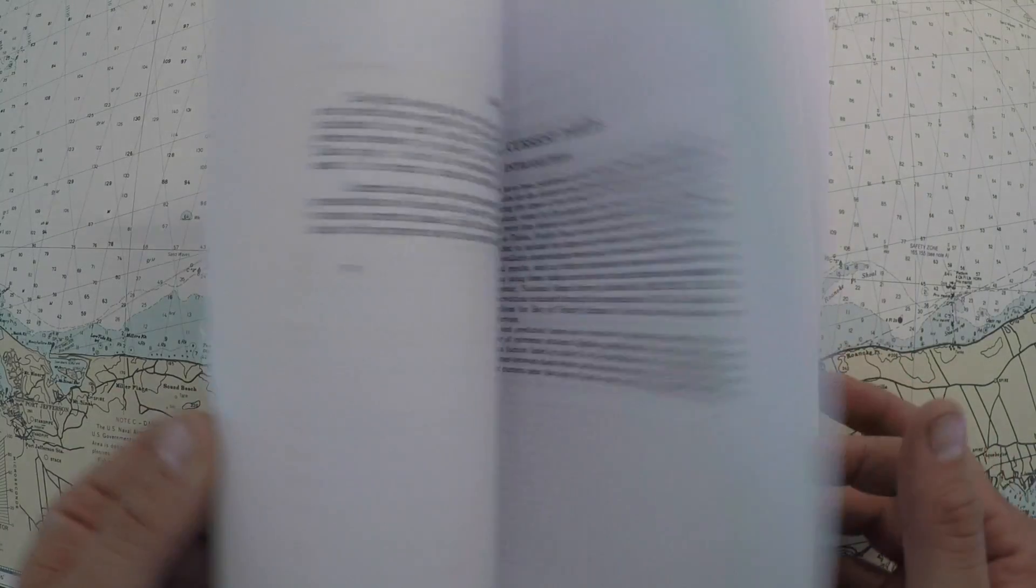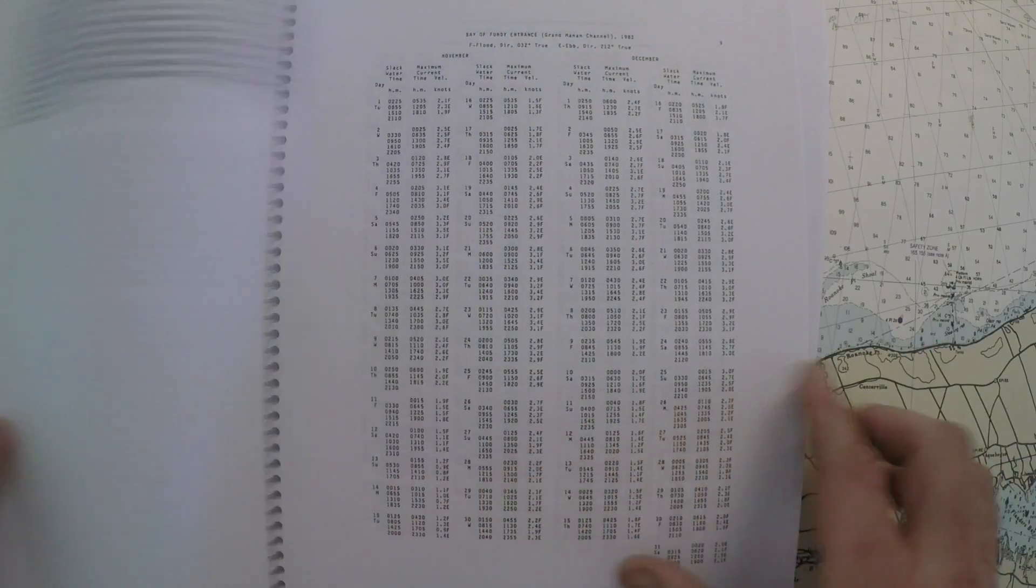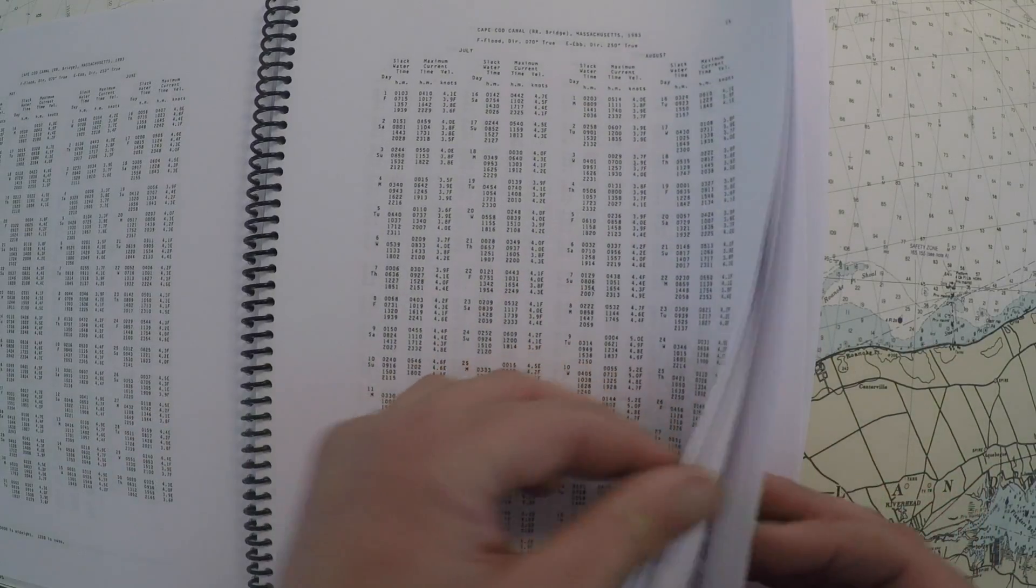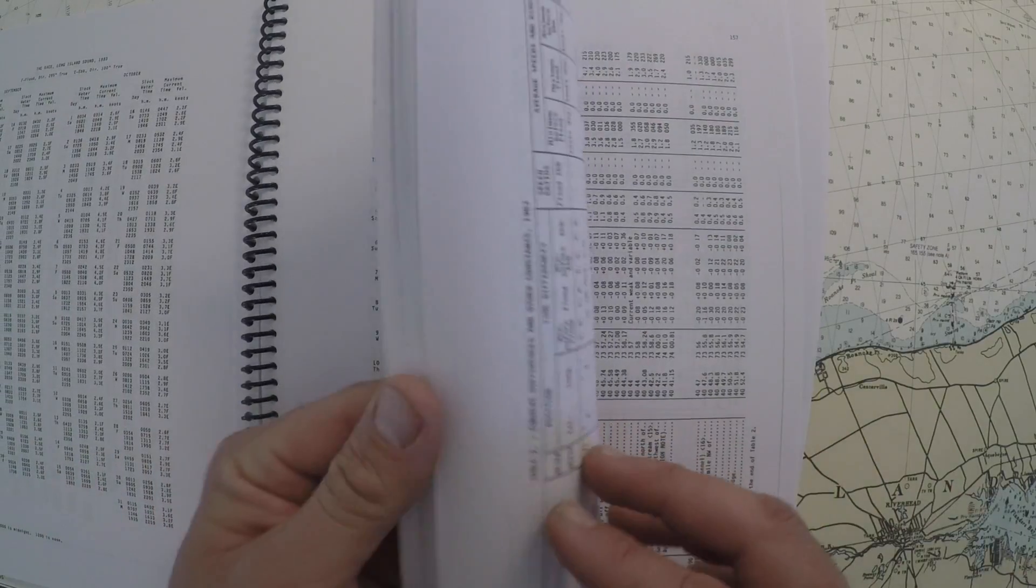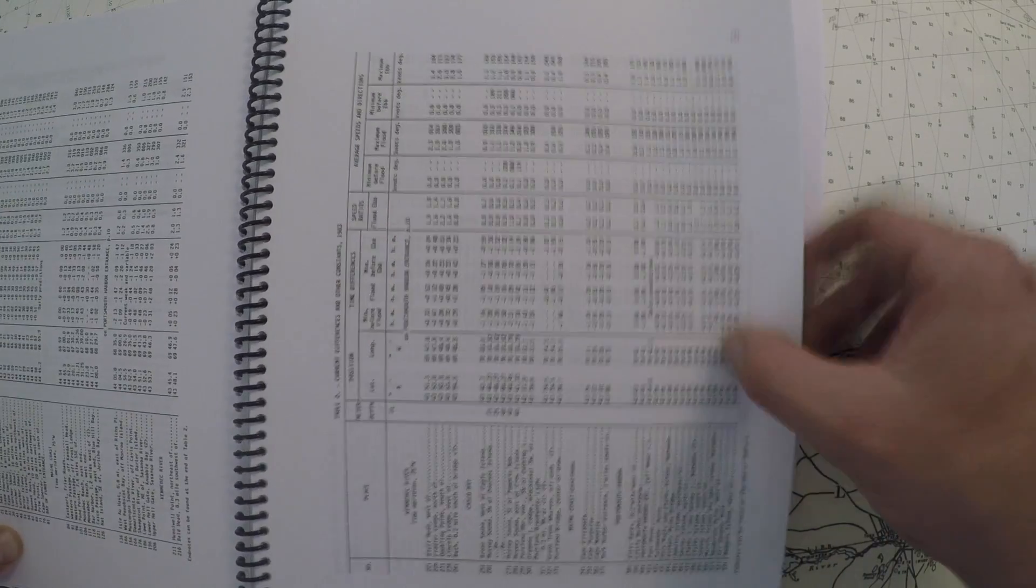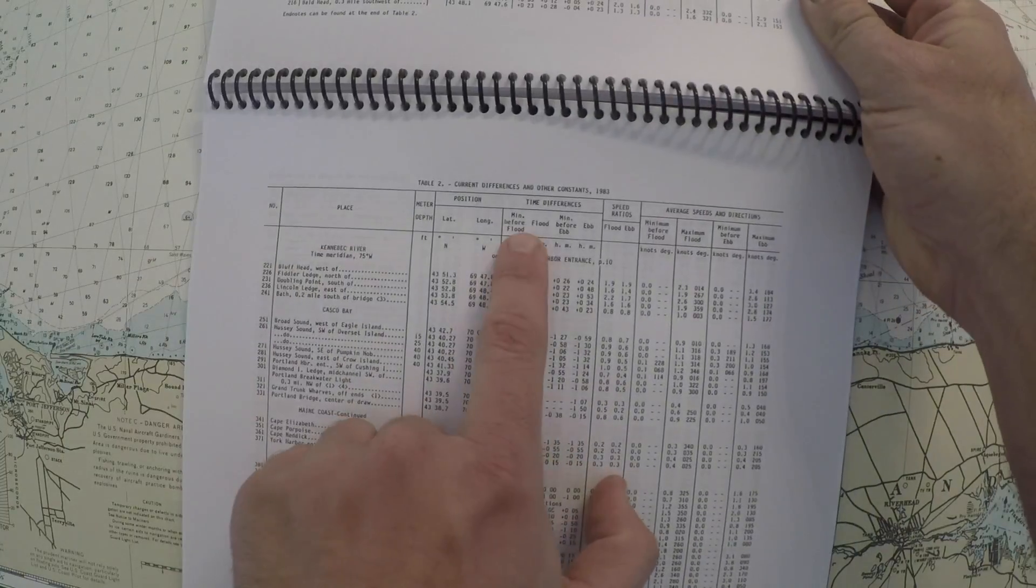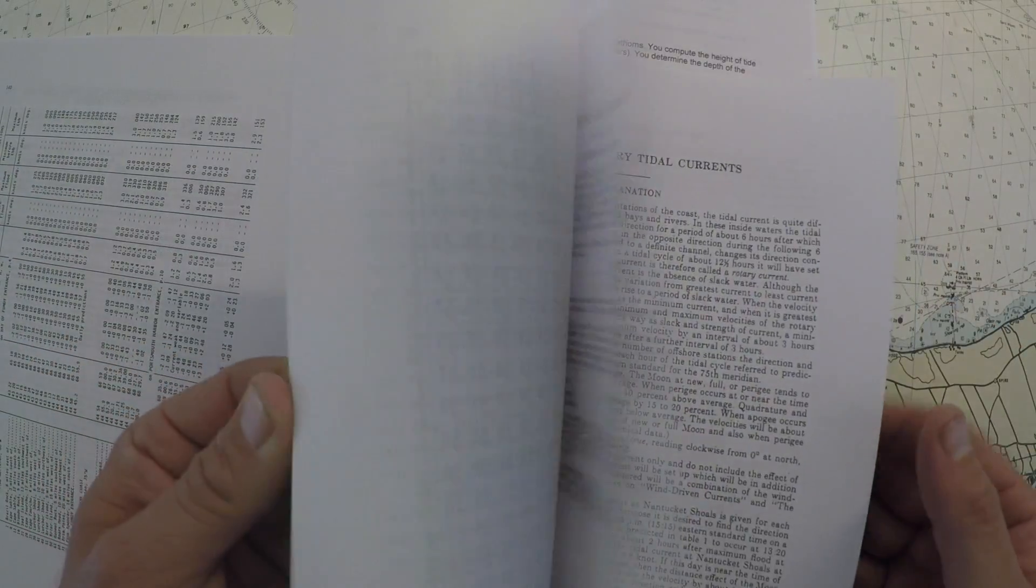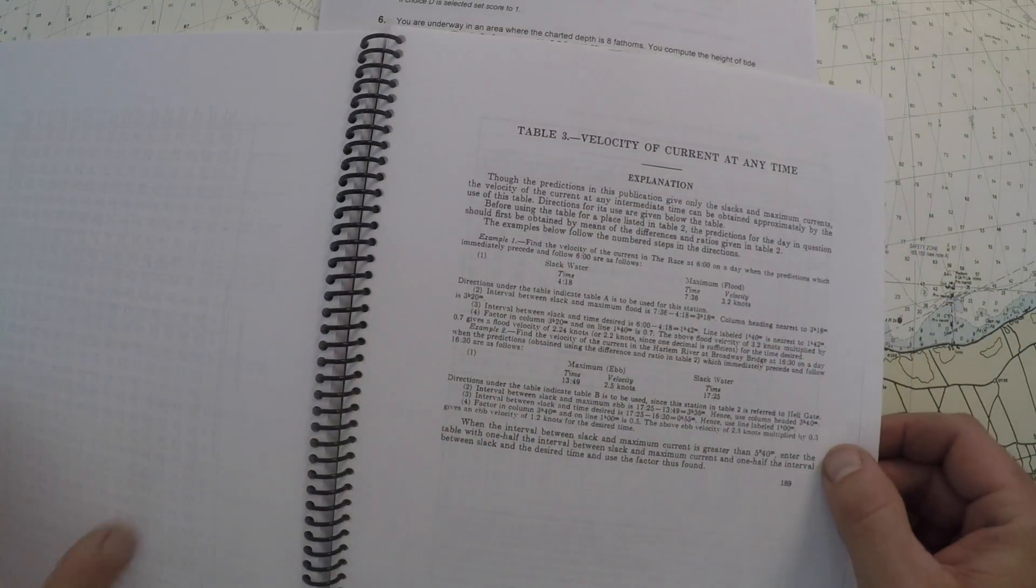Now the tidal current tables are set up with some introductory material. Table one is those like capital cities, Boston, Cape Cod, the big cities. And then table two in the back is where it's going to list all these offsets for our little towns. And then table three is where we can solve the velocity of the current at any time.